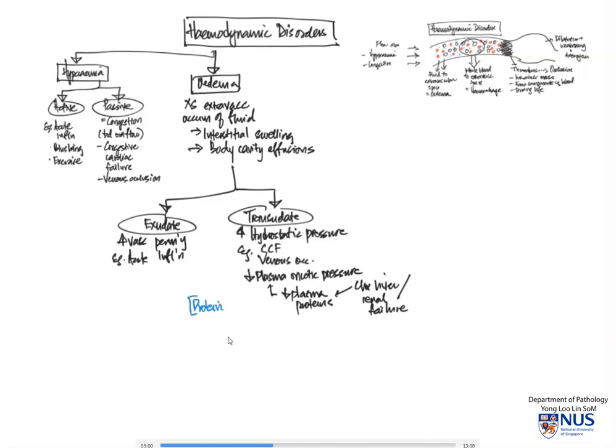So there are several actual measurements that the biochemistry lab can perform on this fluid to decide whether it is an exudate or transudate. For example, the protein concentration or level would actually be higher in exudates because of increased permeability. And as compared to this, it would be lower in transudates. And also the specific gravity along the same lines would be greater in exudates compared to transudates.